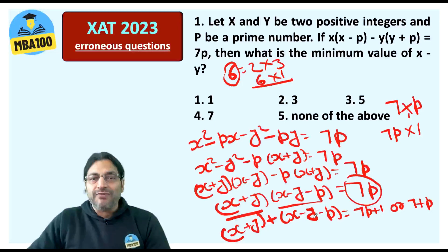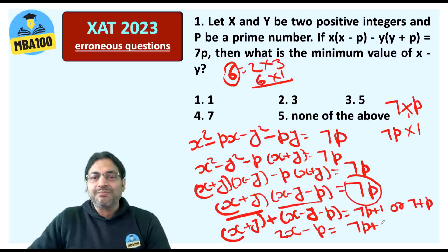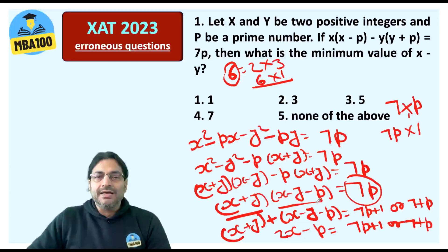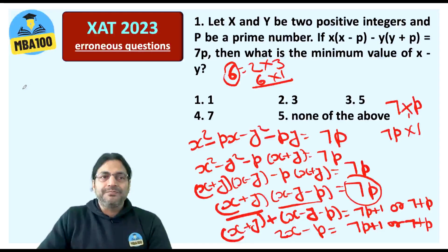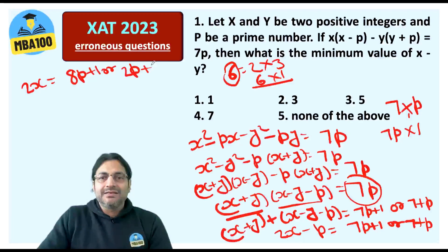So the sum on the left hand side has got to be 7P + 1 or 7 + P. Now X + Y + X - Y - P, Y will get cancelled. This gives you 2X - P. Now 2X - P is 7P + 1 or 7 + P. 2X will be 8P + 1 or 2P + 7.